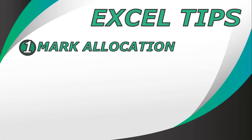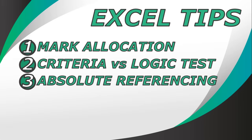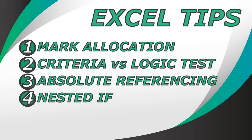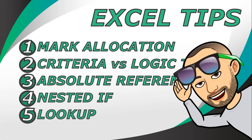Let's recap quickly. Remember to look at the mark allocations to help guide you about which function you should be using. Know the difference between a criteria and a logical test — your criteria must always have double quotes, and you must be able to look at your logical test and say true or false to it. Absolute cell referencing: whenever you're referring to data outside of your table of data, you're normally going to use absolute cell referencing. In a nested IF, remember to start with either the first option or the last option and leave the middle option for last. And with the lookups, make sure you're following all those parameters — remember to use the FALSE argument at the end only if you're dealing with data that's not sorted or if you're looking for a particular type of text. There are five tips that can hopefully help you for the Excel part of your practical exam. Good luck.